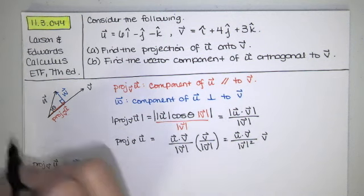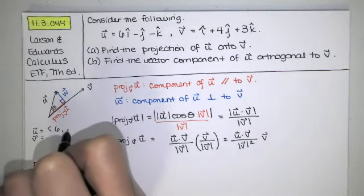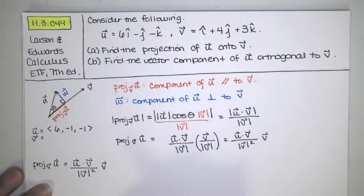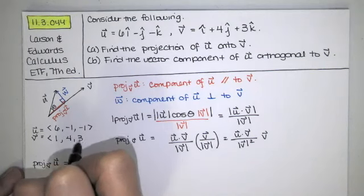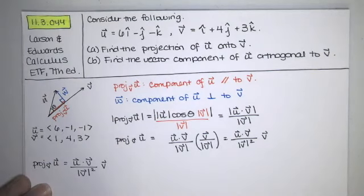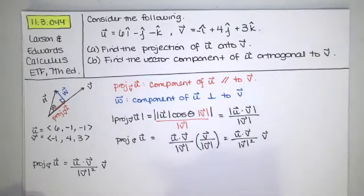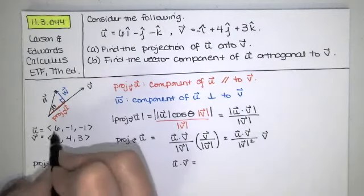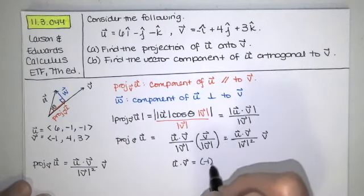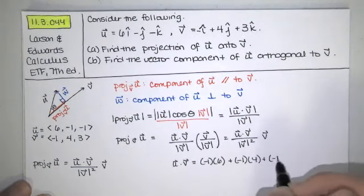So I compute the dot product by doing this. First, I'll write down u and v in component form. So u has components 6, -1, and -1. V has components... actually, let me make sure I wrote that down correctly. That's actually supposed to be a negative i hat. So it's going to be -1, 4, and 3. And now we want to compute the dot product of those two. U dot v comes from multiplying component by component and adding. So we've got -1 times 6 plus -1 times 4 plus -1 times 3.